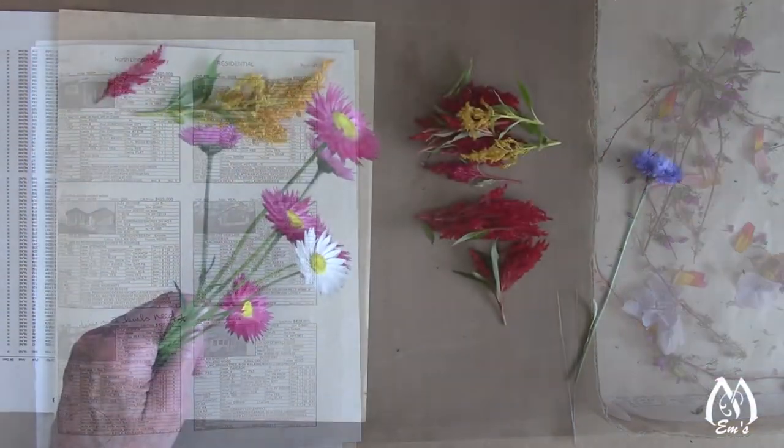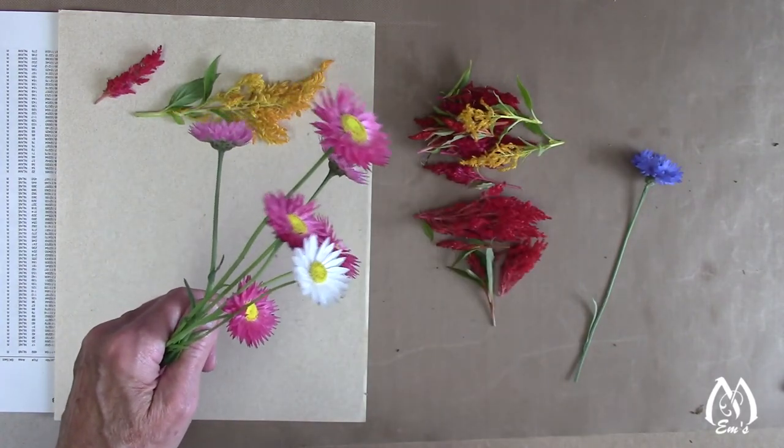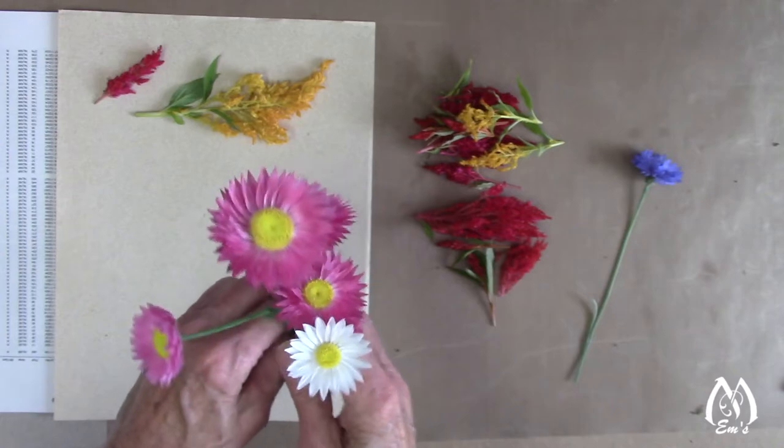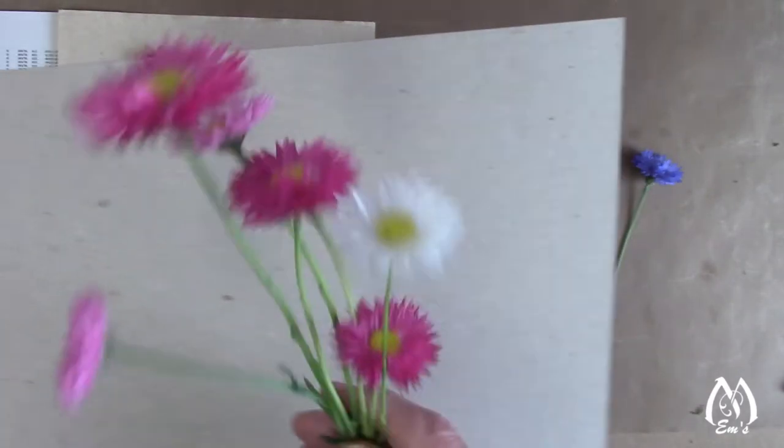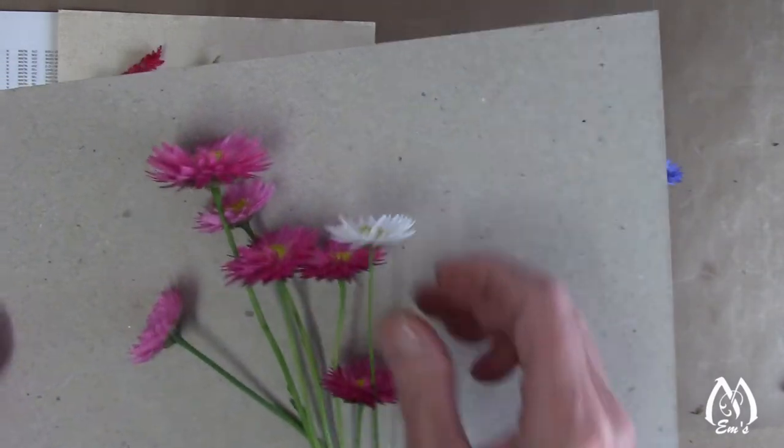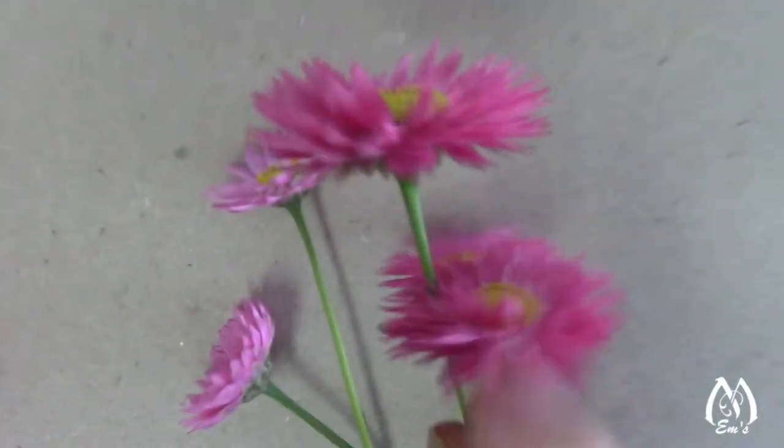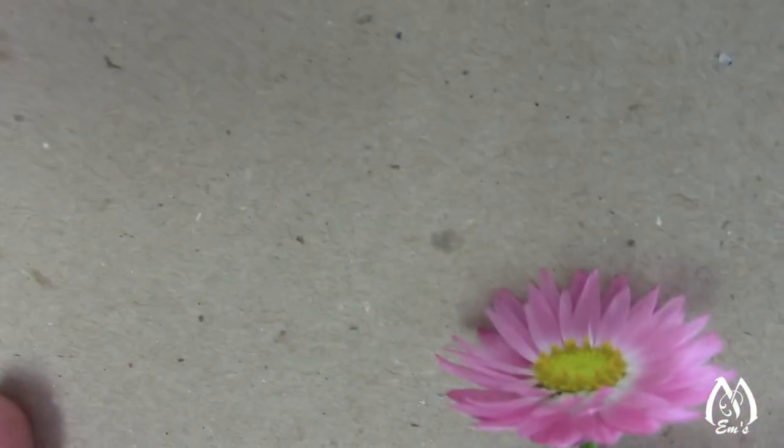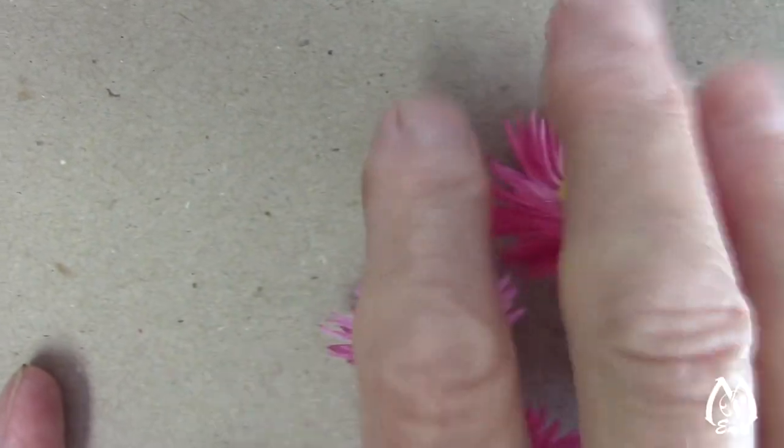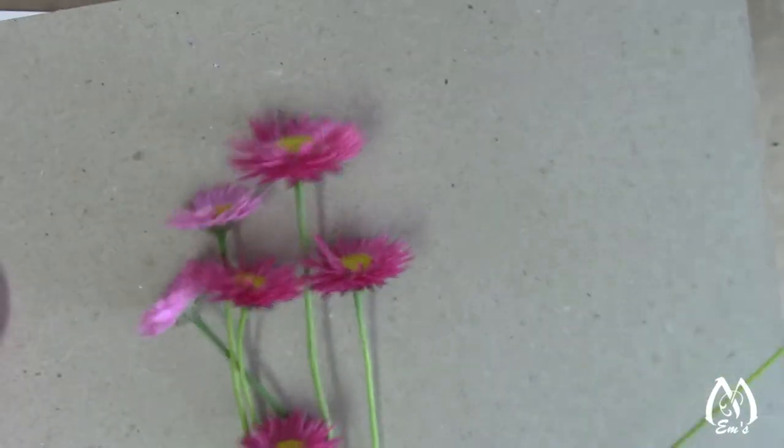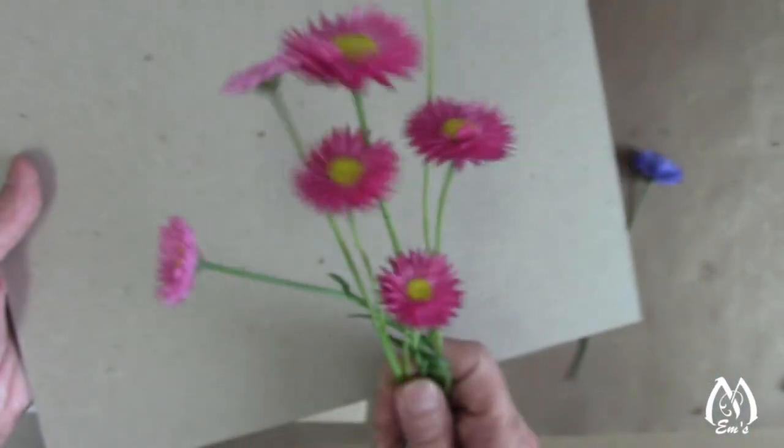While I was out in the yard getting some celosia, which is these guys, they were right next to some acroclenium. So I wanted to show them to you. I'm not going to press these. You can press them. They're a straw flower. Let's see if you can hear this. Can you hear that? They're already dry. That's why they call them a straw flower. But I just want to show you how beautiful acroclenium is.